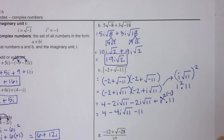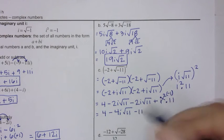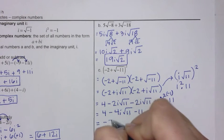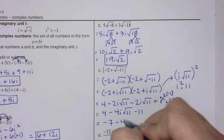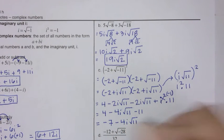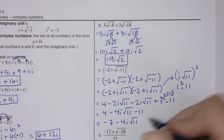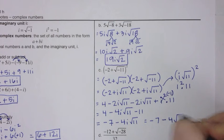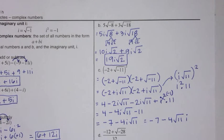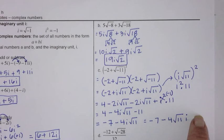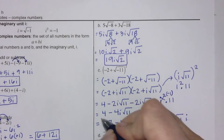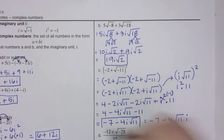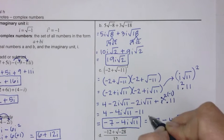Combining like terms: 4 minus 4i root 11 minus 11. Then 4 and negative 11 gives negative 7, so in standard form the answer is negative 7 minus 4i root 11. Some people write this as negative 7 minus 4 root 11 with the i on the outside, which is fine — just be careful that the radical sign does not extend over the i, since that would imply i is part of the radicand when it is not.